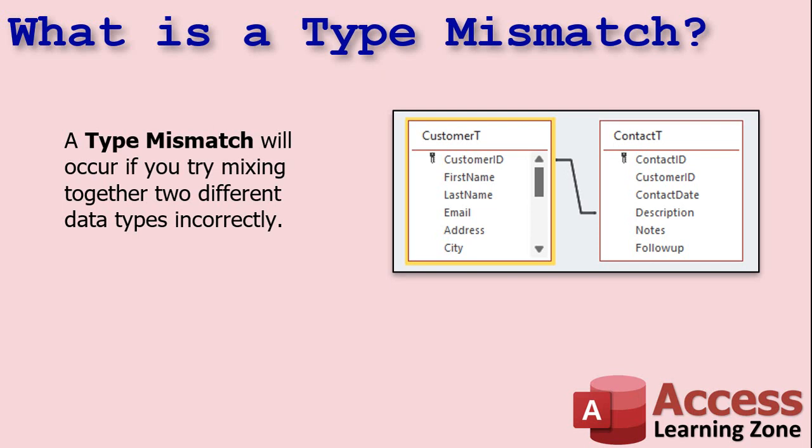Now, what's a data type mismatch? That's when you try to do something involving two different data types. For example, here I've got the customer table, and I'm trying to join the customer ID with a description field in the contact table. Customer ID is an auto number — my primary key, it's a number, a long integer — whereas description is a short text field. Try to join those things together and run a query, you get an error message. That's a data type mismatch.